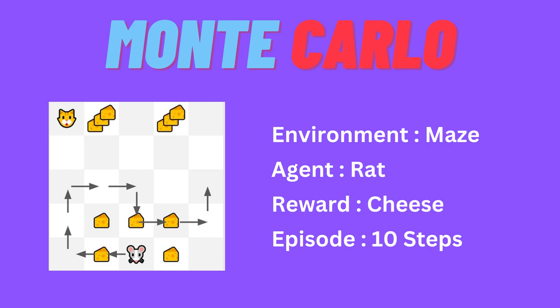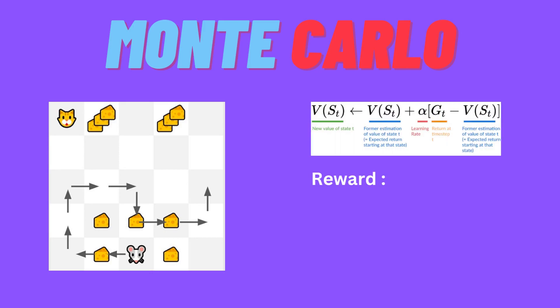We will start in the middle state. We have a total of 1000 trajectories in the path. Each time, my rat will travel one trajectory. The number of cheese collected is the reward for that path. In this example, the rat collects a total of 3 cheese, so the reward equals 3.